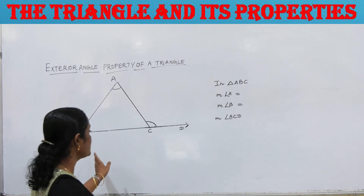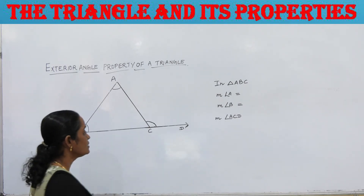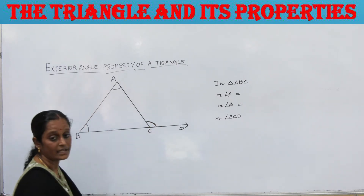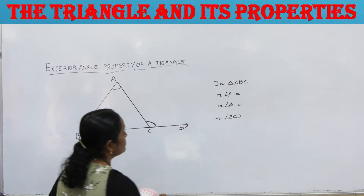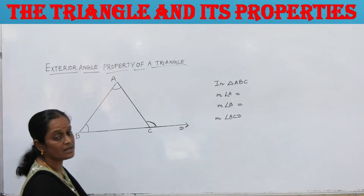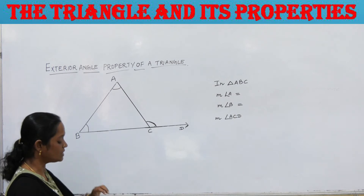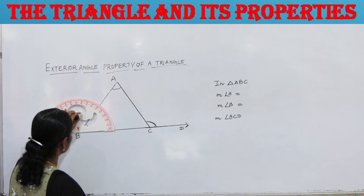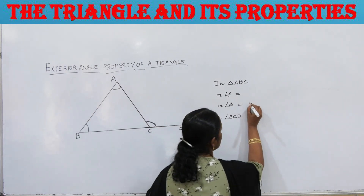First, draw a triangle ABC and extend one of its sides BC to point D so that the exterior angle ACD is formed. Next, take a protractor and measure angle A and angle B — these are the interior opposite angles. Here, the measure of angle B is 50 degrees.